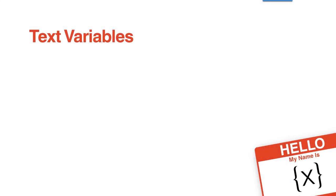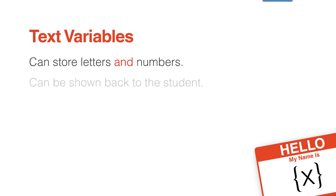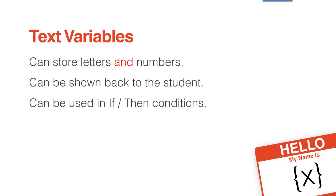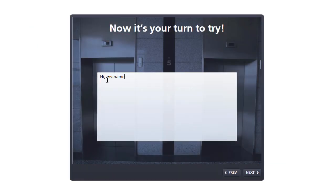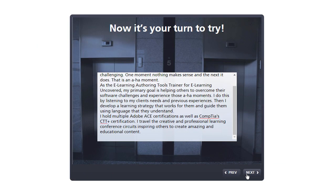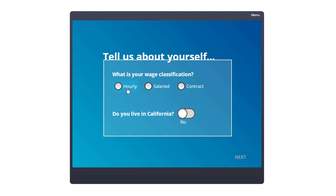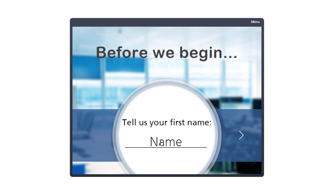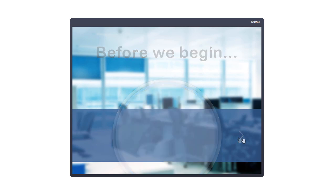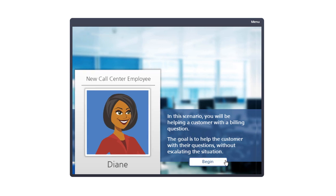Finally, you have text variables. Text variables store letters and numbers that can be used to show back to the student, or used in if-then conditions. Use text variables when you might want the learner to type an answer to a question so that you can use that answer later. Keep track of several options, such as whether an employee is hourly, salaried, or contract. Or type something in that you show back to them later, such as their name to appear in a scenario.